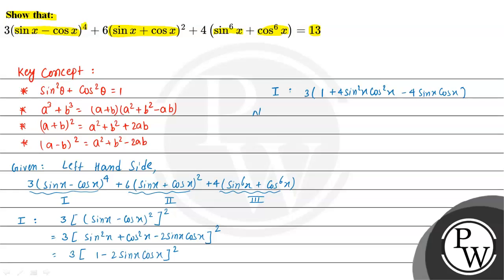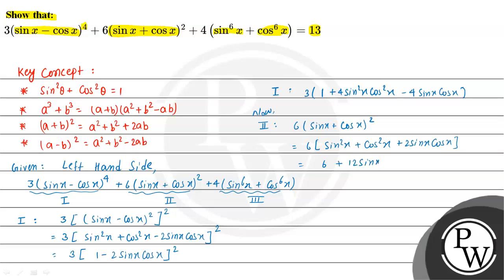Now let's look at the second part: 6 into (sinx plus cosx) whole squared. Applying the (a plus b)² formula, this gives 6 into (sin²x plus cos²x plus 2sinx·cosx). Since sin²x plus cos²x equals 1, this becomes 6 into (1 plus 2sinx·cosx), which equals 6 plus 12sinx·cosx.